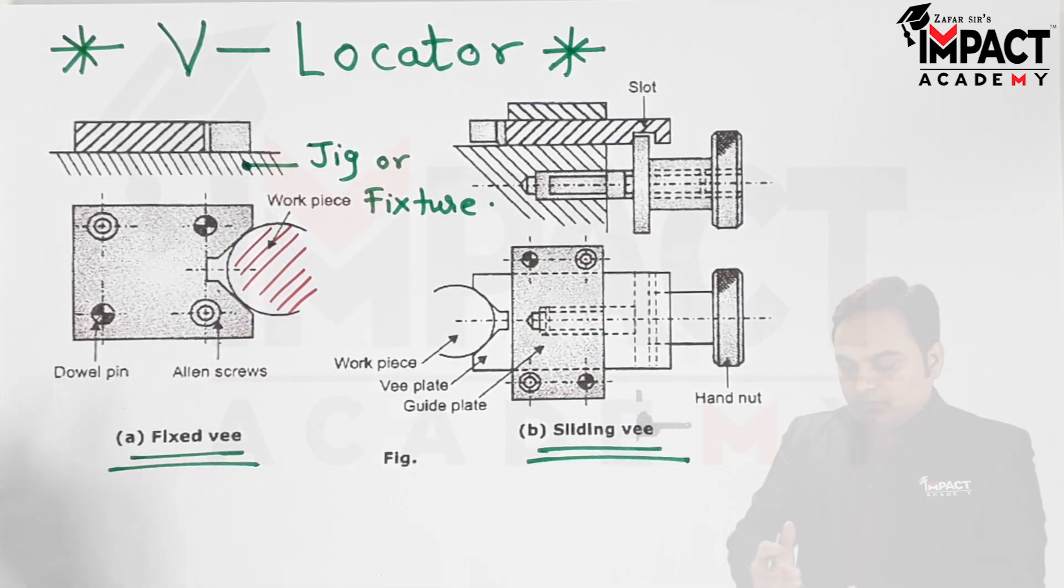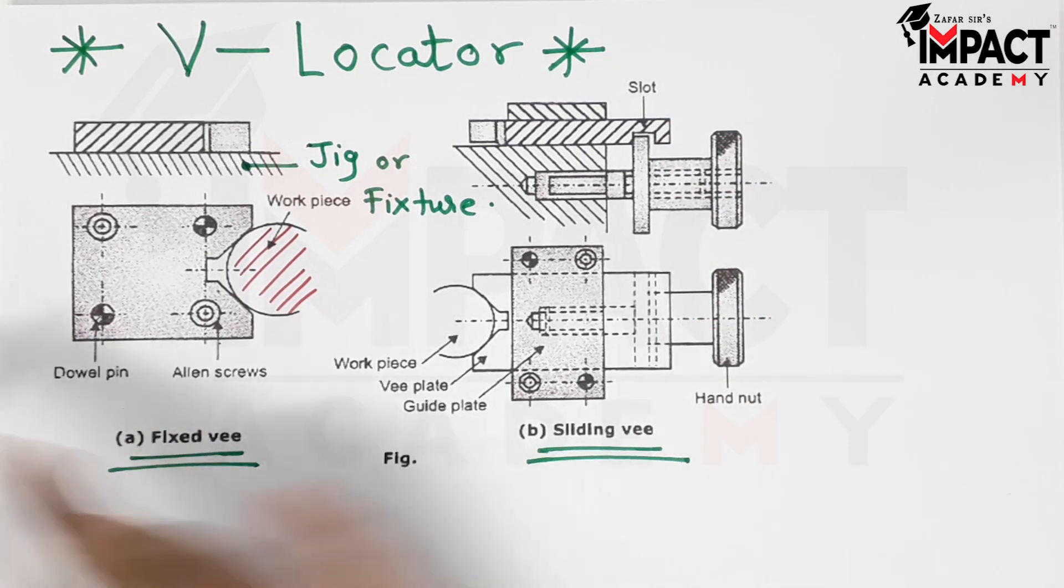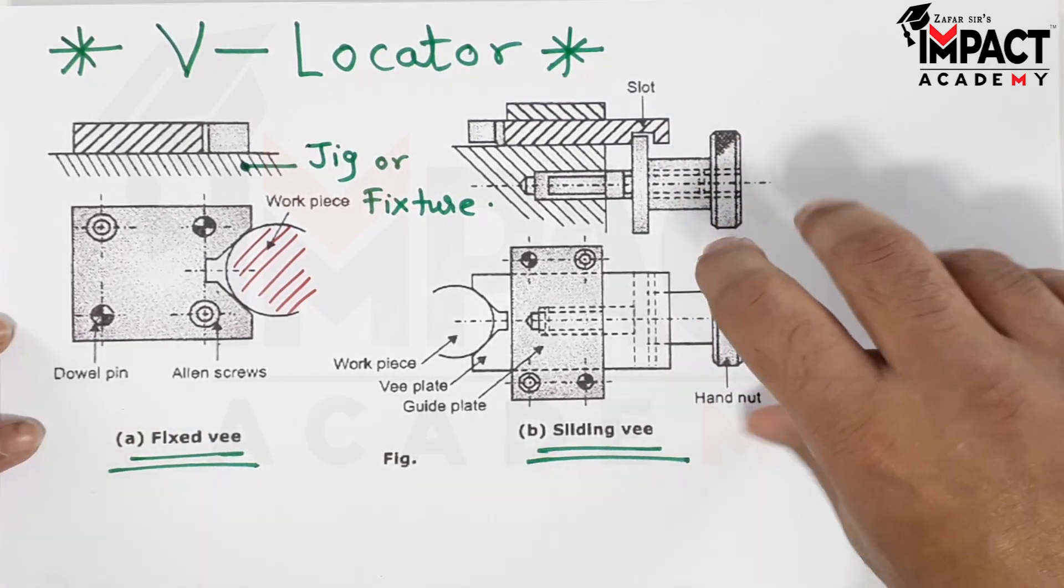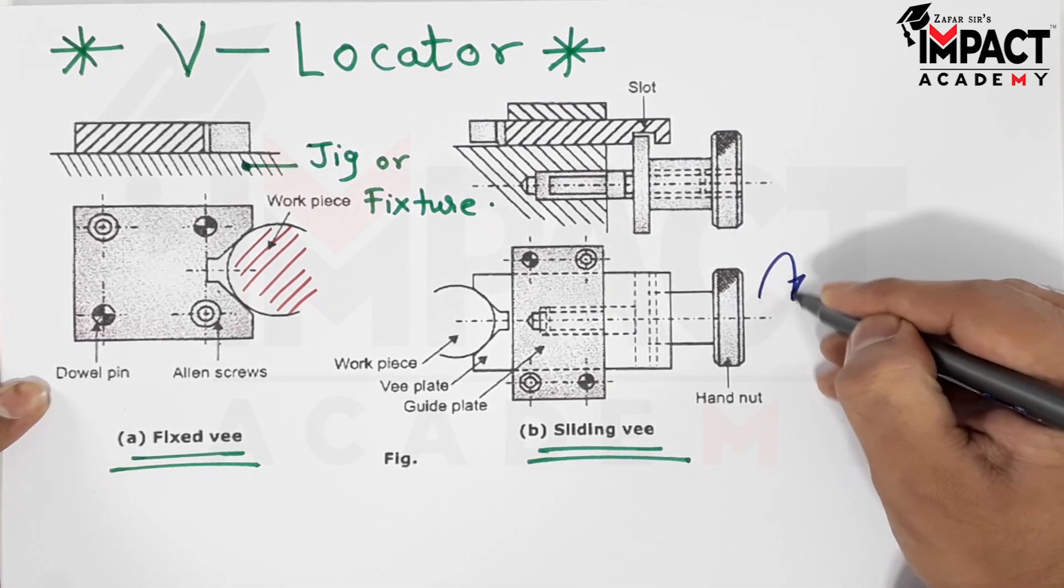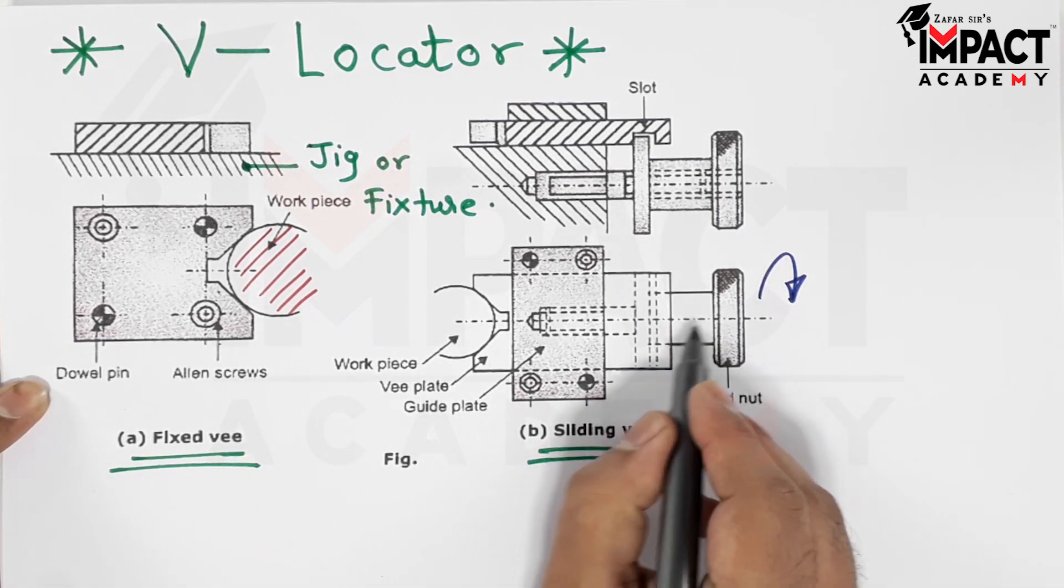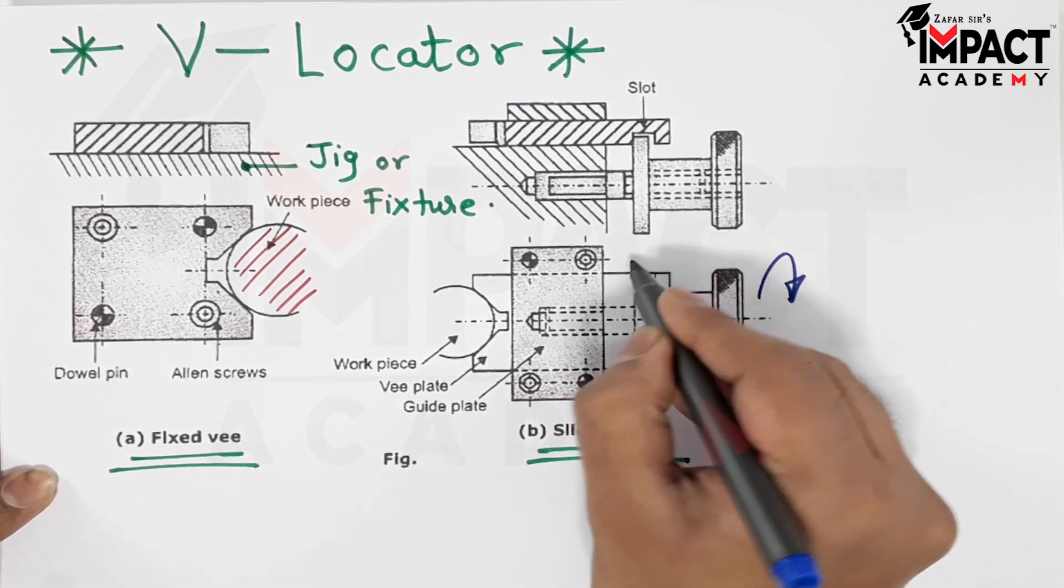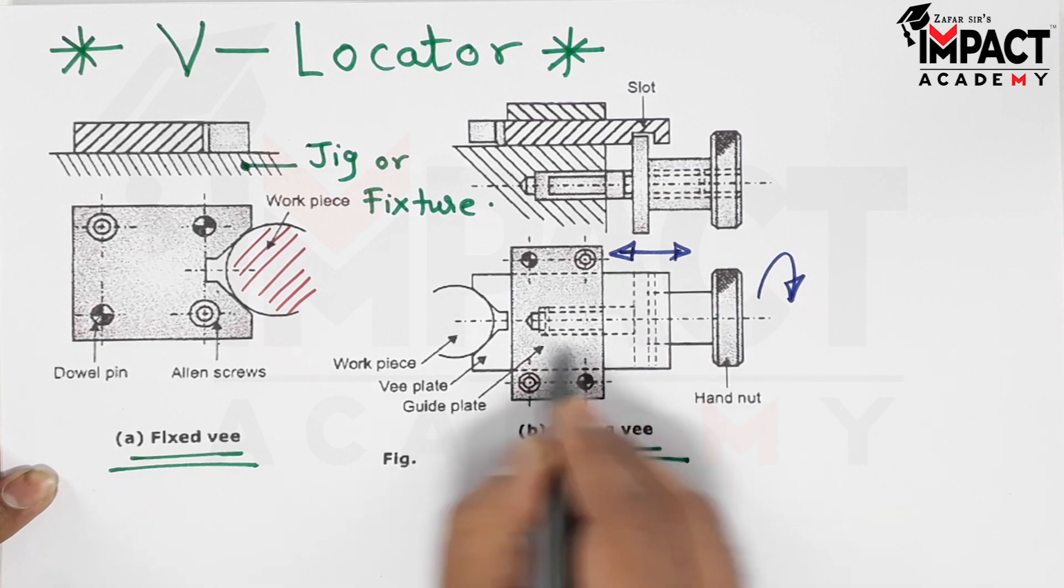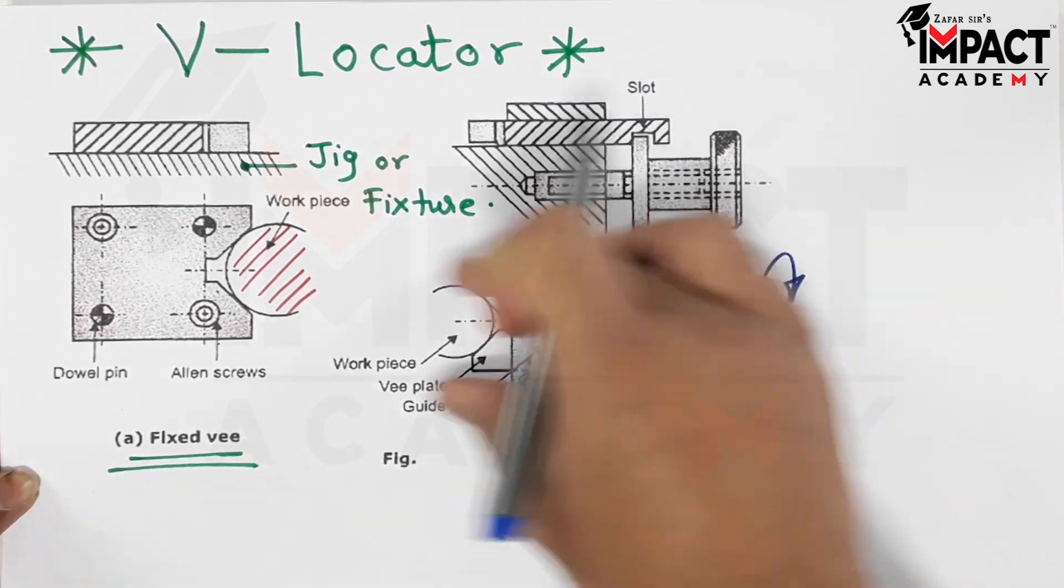We can say the improved version of this V-locator is the sliding V, in which here we are having a hand nut. With the help of the hand nut, by rotating it, when we are rotating the hand nut, then with the help of the threaded screw, this V-locator would try to slide towards or away from the workpiece. So there is an added feature that we can move the V-locator.